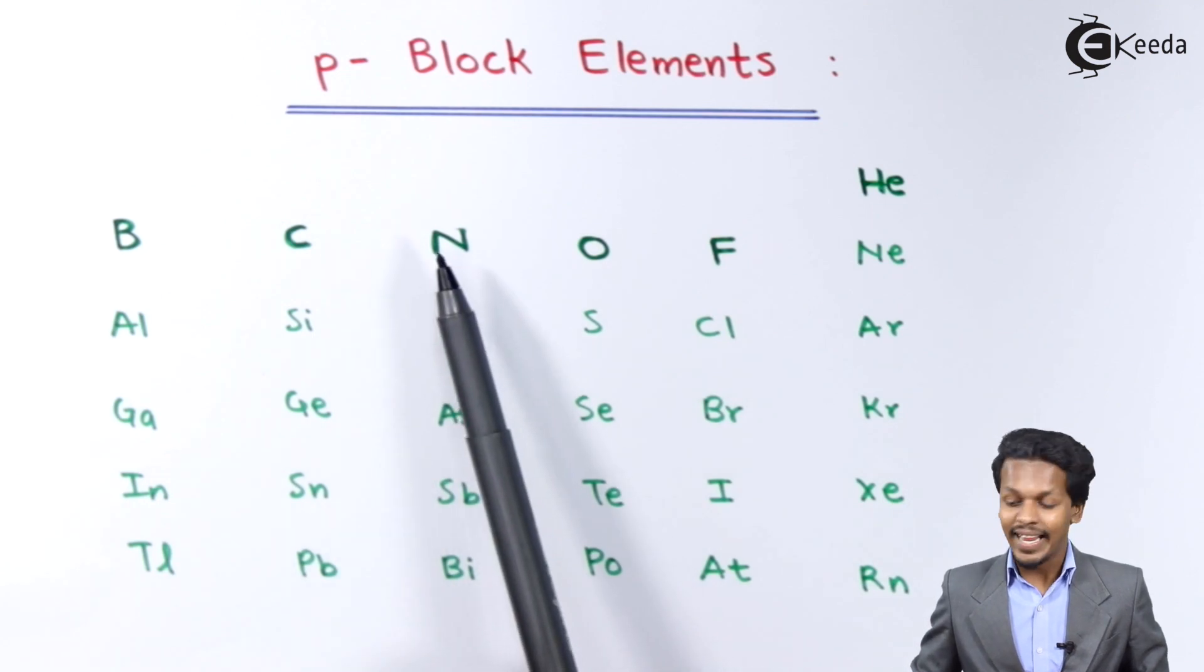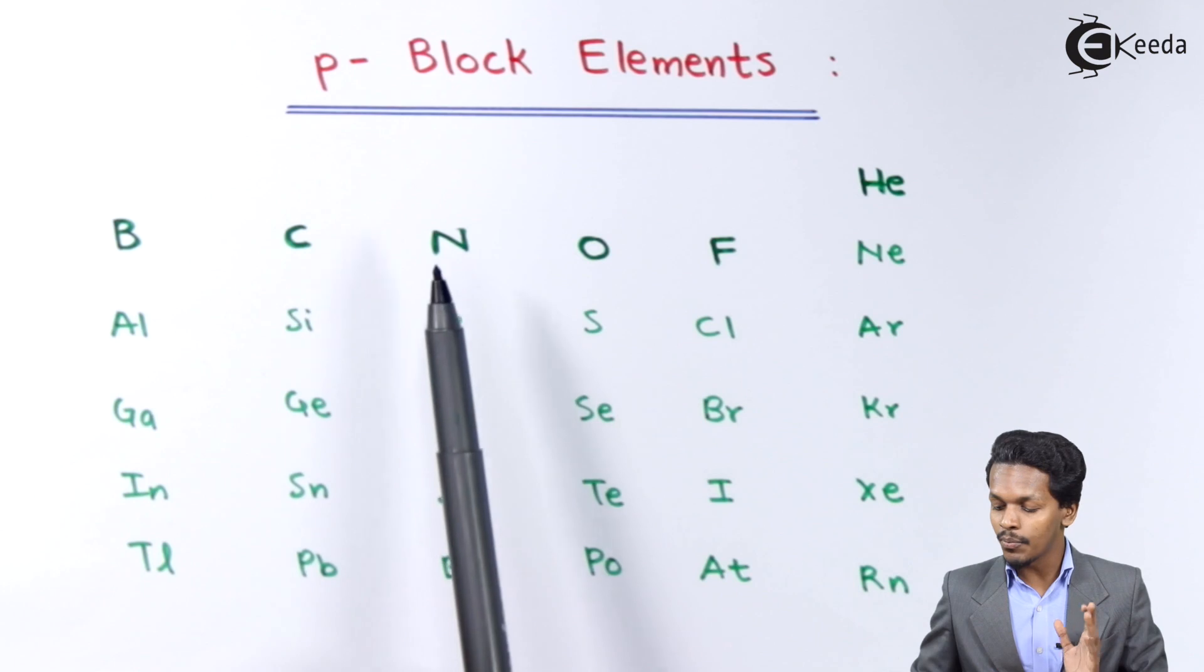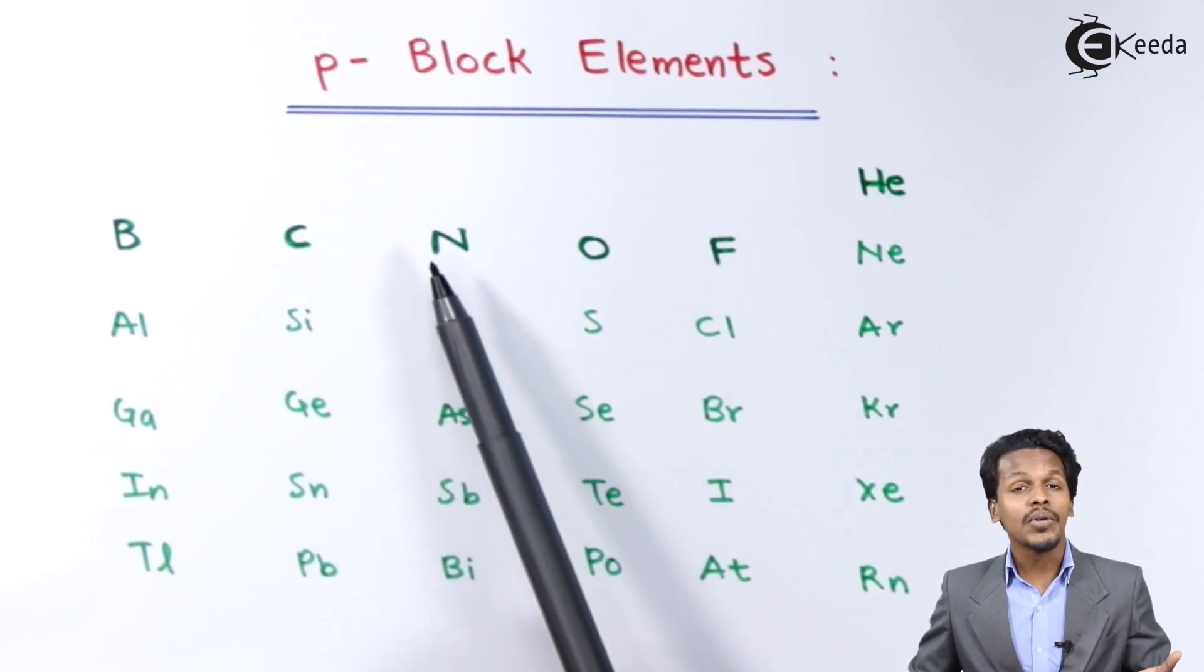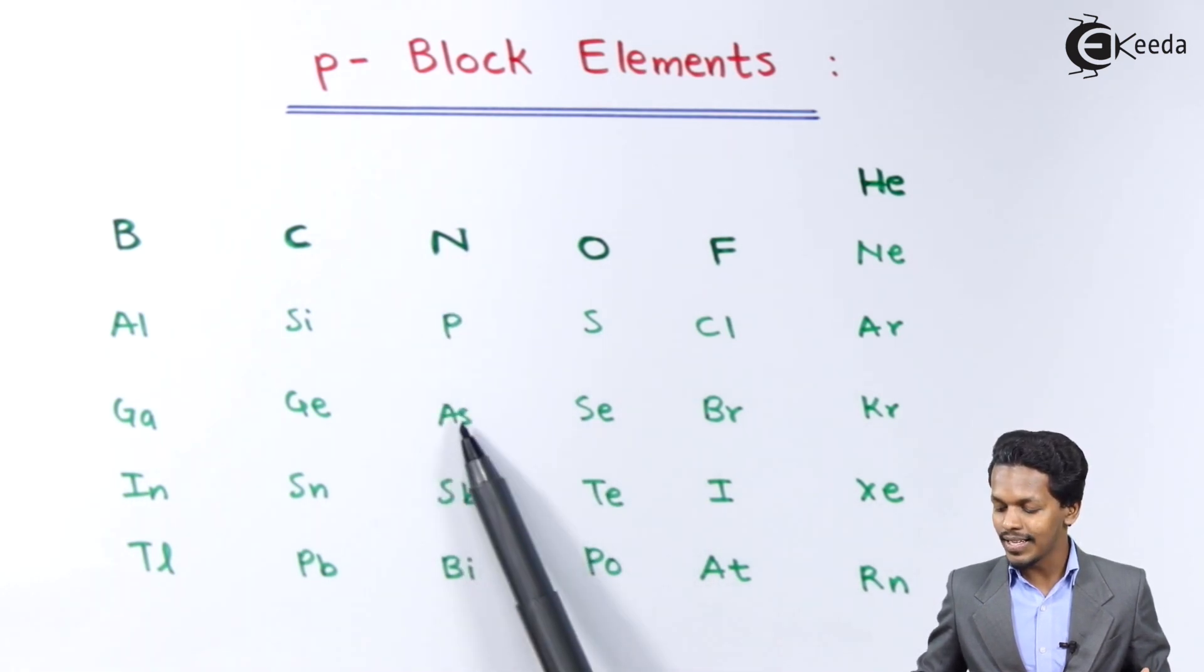And this is group 15, which I am going to talk about in my next lecture, from group 15 to group 18. This is the main syllabus of the 12th standard for HSC board. Talking about the first one, Nitrogen is the first element of group 15, and after that it is Phosphorus, Arsenic, Antimony and Bismuth.